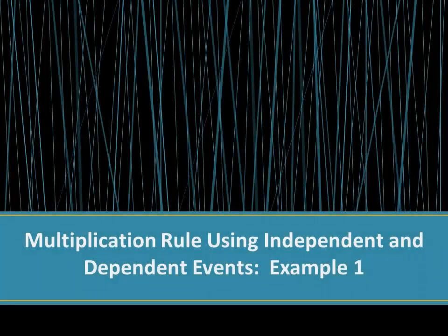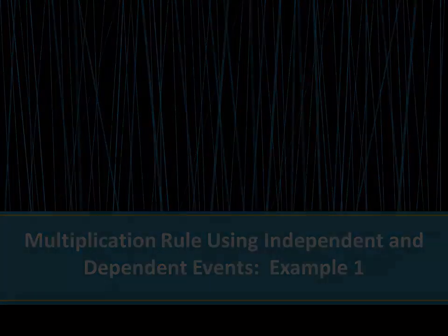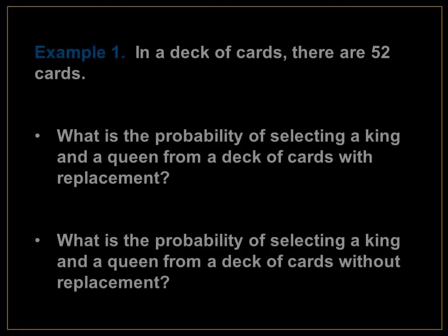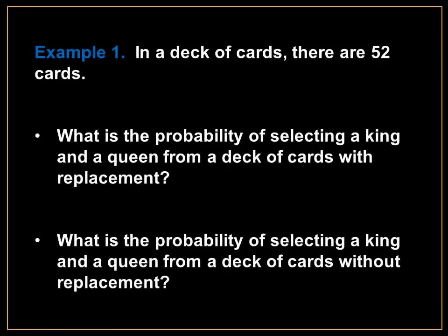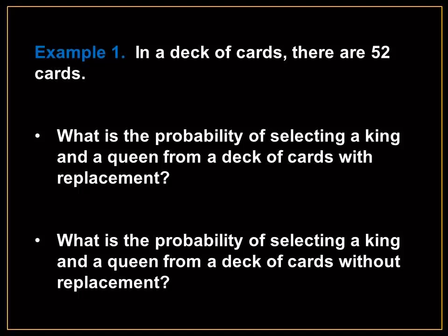The multiplication rule using independent and dependent events. For example, in a deck of cards, there are 52 cards. Question number one: what is the probability of selecting a king and a queen from a deck of cards with replacement? Question number two: what is the probability of selecting a king and a queen from a deck of cards without replacement?